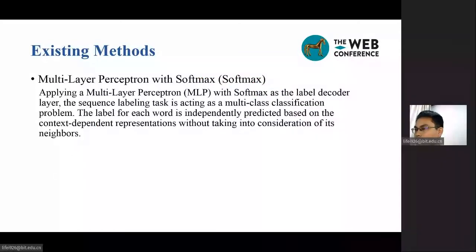Applying a multi-layer perceptron with softmax as the label decoder layer, the sequence labeling task is treated as a multi-class classification problem. The label for each word is independently predicted based on the context-dependent representations without taking into consideration its neighbors.